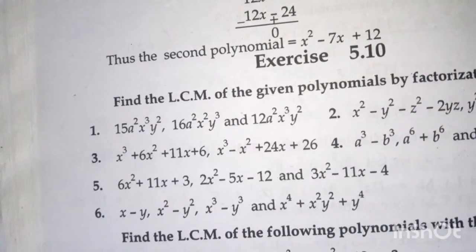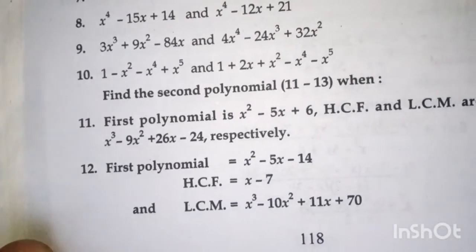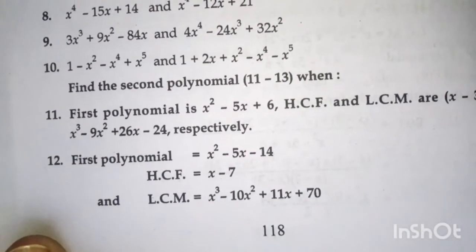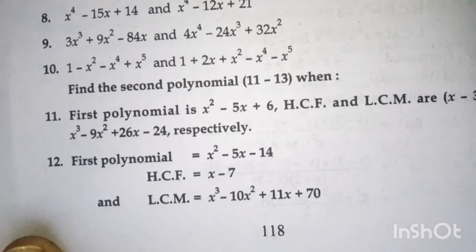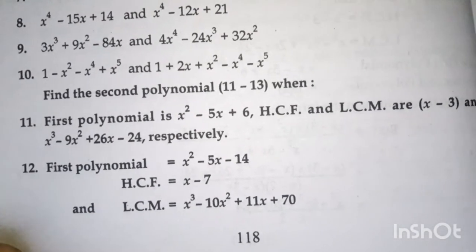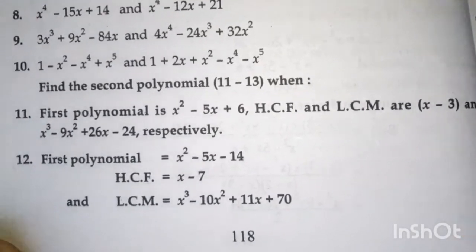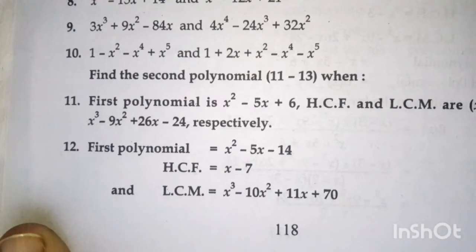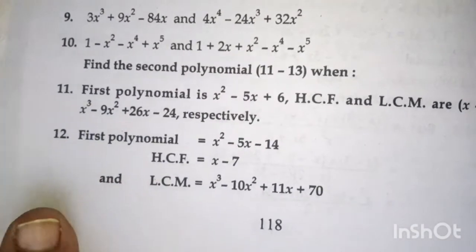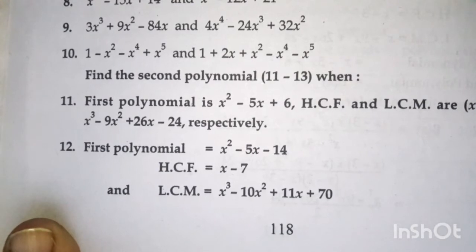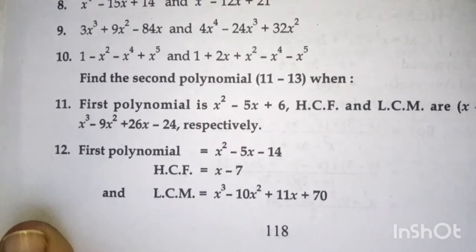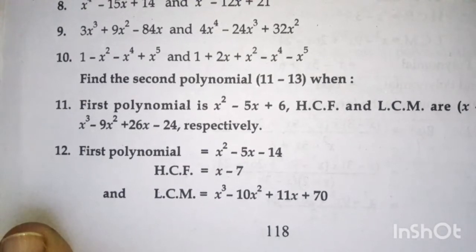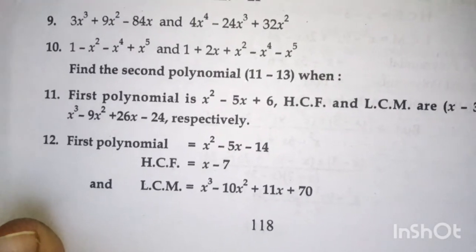Dear students, this is exercise 5.10, question number 11. The first polynomial is x squared minus 5x plus 6. The HCF and LCM are x minus 3 and x cubed minus 9x squared plus 26x minus 24 respectively. In this question, the HCF and LCM values are given along with one polynomial, and you have to find out the second polynomial.